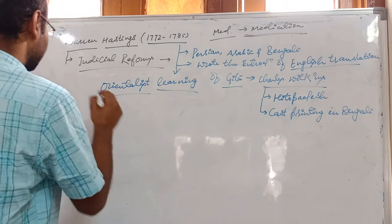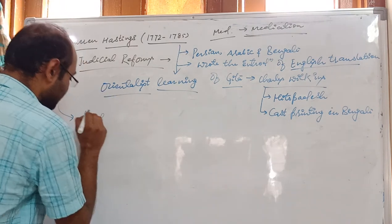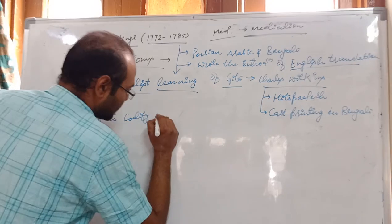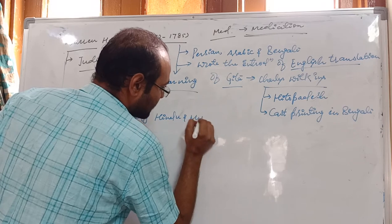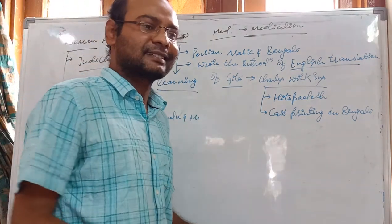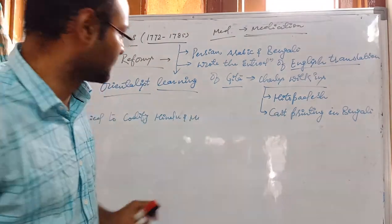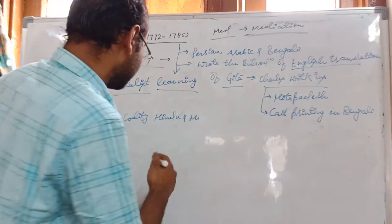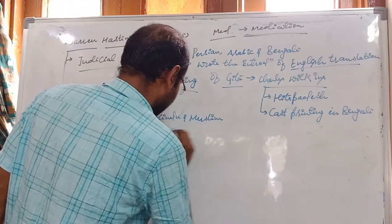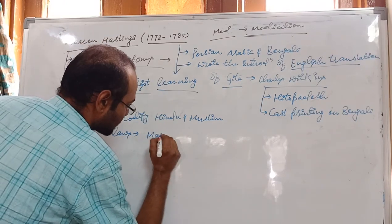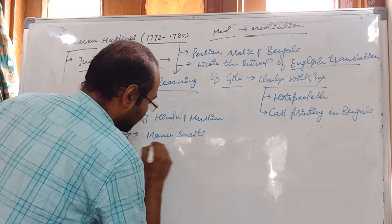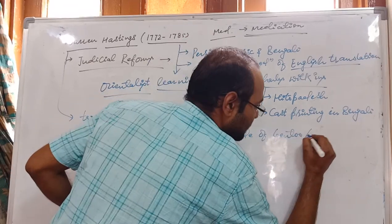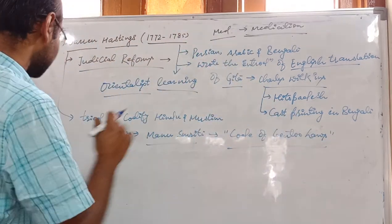He tried — though he could not fully succeed, as Cornwallis's Code of 1793 would later accomplish — to codify Hindu and Muslim laws. Modern codified law like the IPC or CrPC clearly specifies what each section covers, but medieval Hindu and Muslim laws were generic and difficult to interpret. As part of this effort, the Manusmriti was translated into English under the name 'Code of Gentoo Laws' — which is very important for prelims.